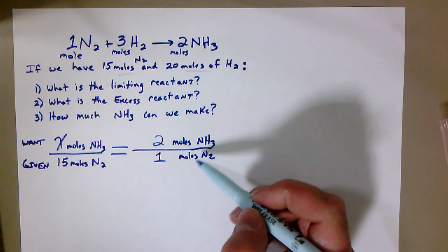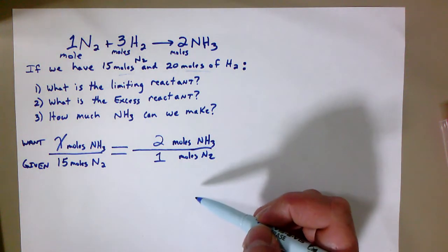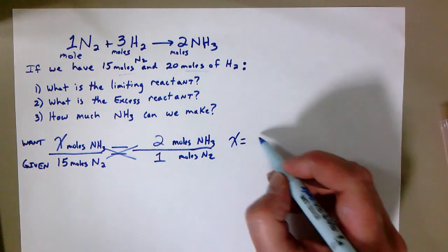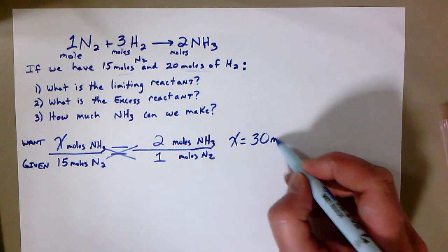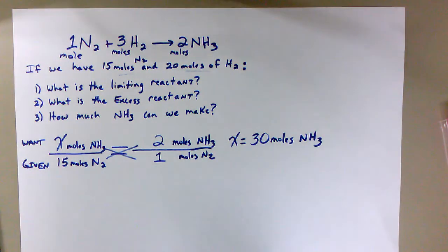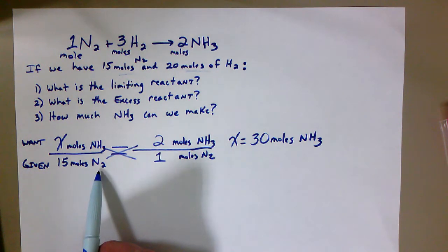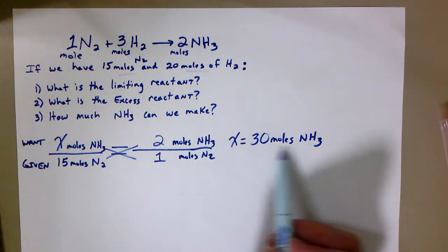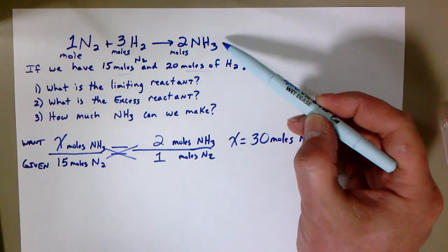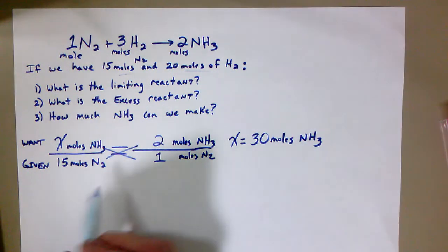And basically, this is just saying for every one of the N2s you have, there is enough atoms of nitrogen in there to make two moles of NH3. Okay, so then we solve it. It's a cross-multiply question, right? And when we solve for X here, we're going to get that X is 30. The units there is moles of NH3. Now again, we've got to take a step back. We've got to say, okay, what does this actually tell us? This is actually telling us that if all 15 moles of N2 are reacted, it is enough to make 30 moles of our NH3 product. If all 15 of these react, it's enough to make 30 of the NH3s.